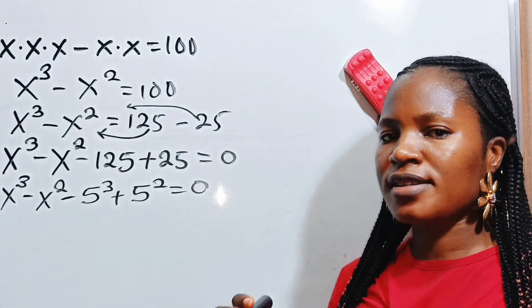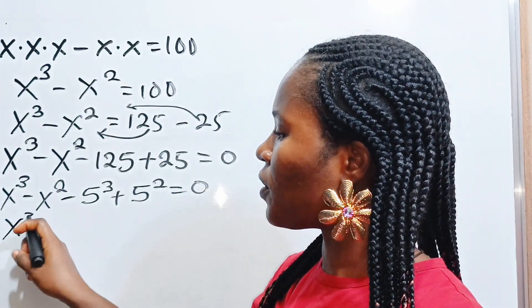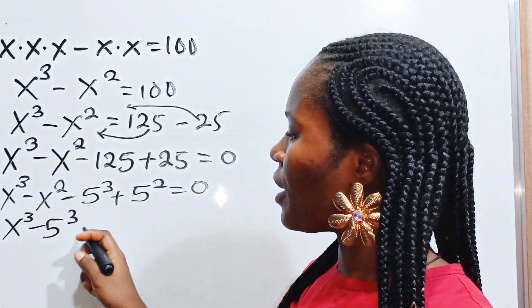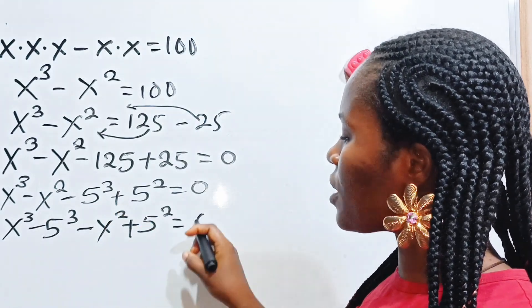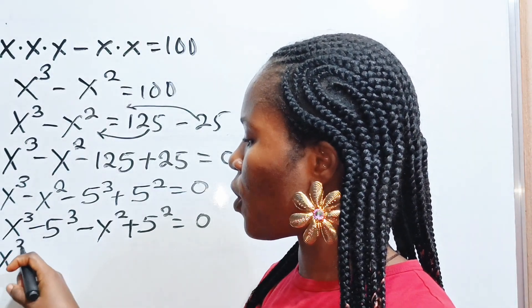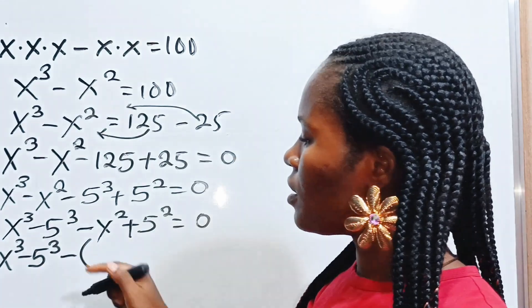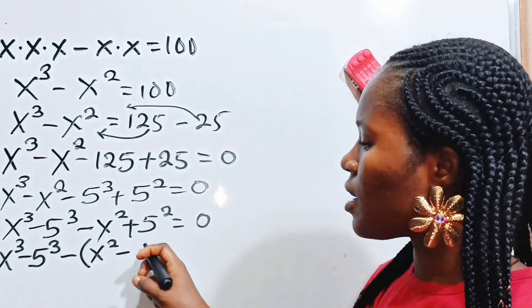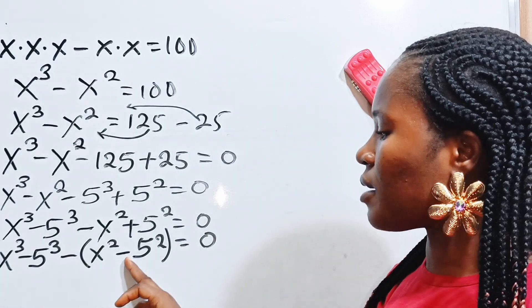So now we have x to the power of 3 minus x to the power of 2 minus 125 plus 25 equals 0. Now 125 is 5 to the power of 3, and 25 is 5 to the power of 2. Let's collect like terms in terms of power: we have x to the power of 3 minus 5 to the power of 3, then minus x to the power of 2 plus 5 to the power of 2, equals 0.